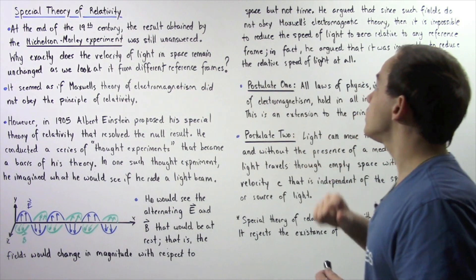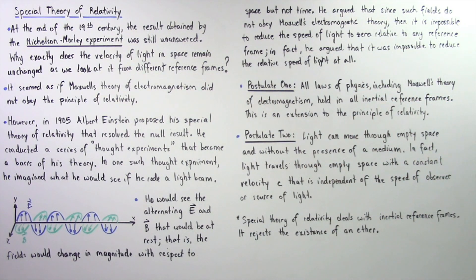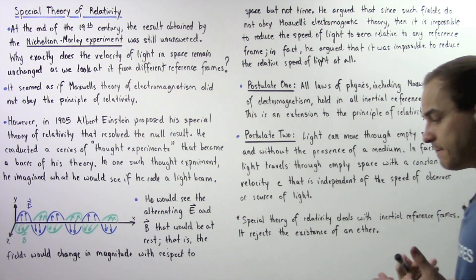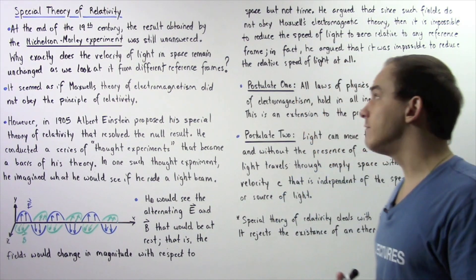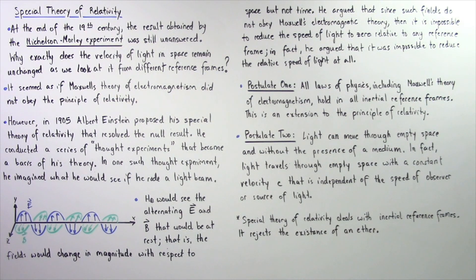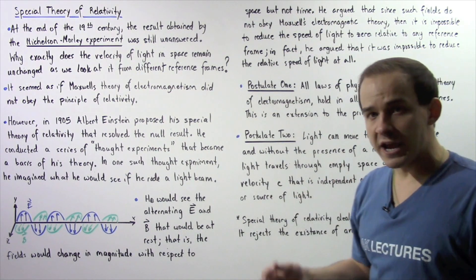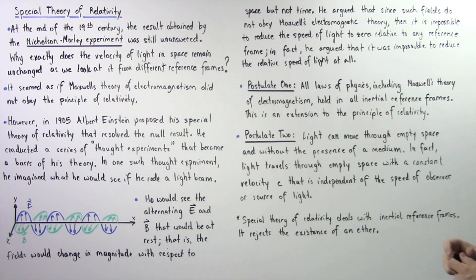He argued that since such electric and magnetic fields do not actually obey Maxwell's theory of electromagnetism, then it is impossible to reduce the speed of light to zero relative to any reference frame. That is, he argued that it was impossible to reduce the relative speed of light at all.